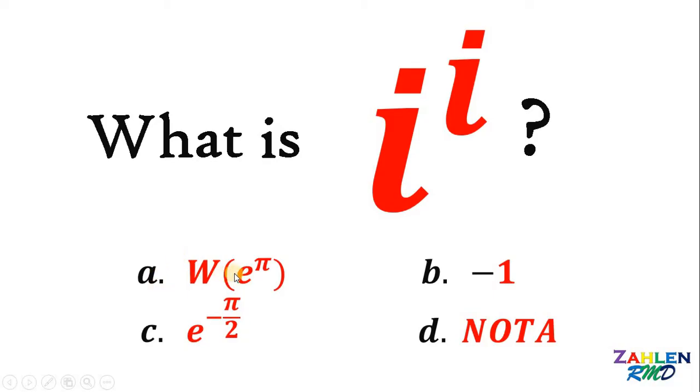a, W of e raised to π, wherein this W means Lambert W function. Letter b, it is equal to negative 1. Letter c, we have e raised to negative π over 2. And letter d, none of the above.